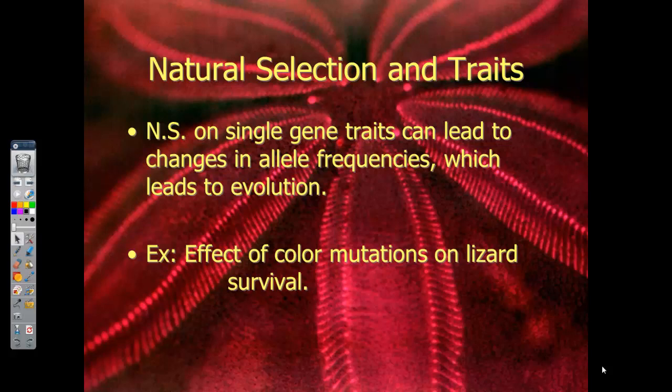Natural selection in its relationship to traits: single gene traits lead to changes in the frequencies of that particular allele in a population. If a dominant trait is favored, then that's what the majority of the population will be. If the recessive gene is favored, you'll see more recessive phenotypes. For example, a lizard can survive if its background matches its skin color — a light gray lizard may not survive in a grassy knoll, but a green lizard would.